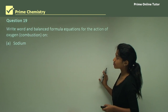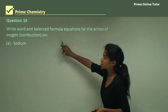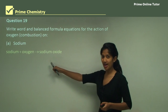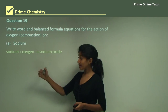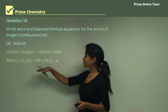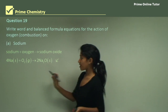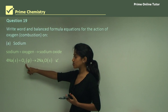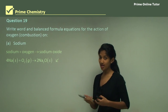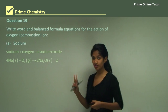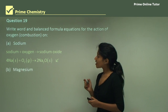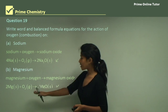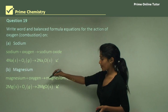Question 19: Write word and balanced formula equations for the action of oxygen on sodium. Sodium reacts with oxygen to form sodium oxide. Writing the chemical equation: 4Na + O₂ → 2Na₂O. Sodium has a valency of 1 and oxygen has a valency of 2; when they cross over it becomes Na₂O. Also, magnesium reacts with oxygen to form magnesium oxide — a white powder. The chemical equation: 2Mg + O₂ → 2MgO.